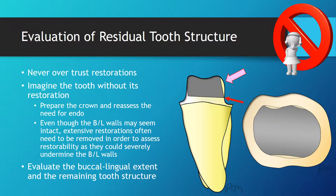In a situation like this one, two options are available to the dentist. The tooth could be root canal treated in order to get retention from the canal space, or the tooth could simply be restored with an inlay or onlay to preserve the buccal and lingual tooth structure. This is discussed in another video.